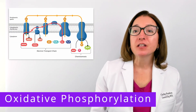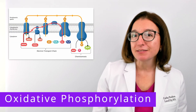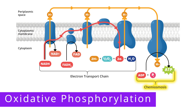The next process after the electron transport chain is chemiosmosis. During chemiosmosis, we use the energy from the proton gradient formed by the electron transport chain to drive the production of ATP. Hydrogen ions flow down the electrochemical gradient through ATP synthase, which is a protein complex in the membrane. In prokaryotic cells, hydrogen ions flow from the extracellular space into the cytoplasm, whereas in eukaryotic cells, hydrogen ions flow from the intermembrane space of the mitochondria into the mitochondrial matrix.